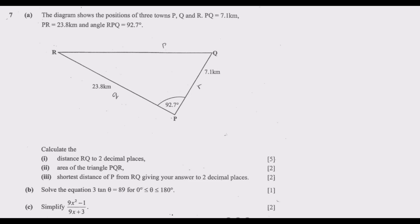Let us move straight to question 7. The diagram shows the positions of three towns P, Q, and R. RQ is equal to 7.1 kilometers, PR is equal to 23.8 kilometers, and angle RPQ equals 92.7 degrees. Part (a): (i) calculate the distance RQ to two decimal places, (ii) find the area of triangle PQR, (iii) find the shortest distance of P from RQ to two decimal places. Part (b): solve the equation 3tan(θ) = 89 for 0° ≤ θ ≤ 180°. Part (c): simplify (9x² - 1) / (9x + 3).